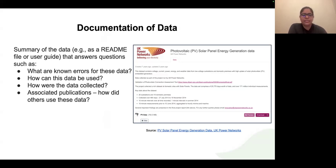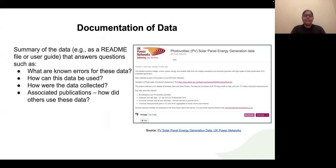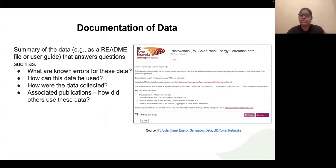Other things that can be answered in data documentation include how this data can be used — some examples of how you used it, how and where the data was collected, or if there are any publications associated with that data, or if any other research paper referenced it. All these kinds of information can be documented in a user guide or readme file about the data.